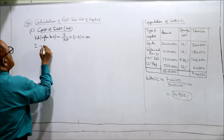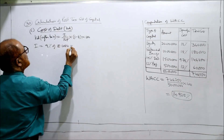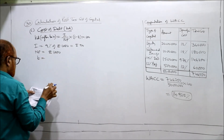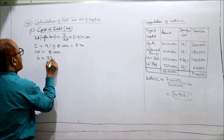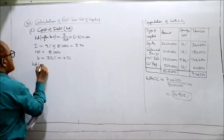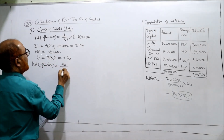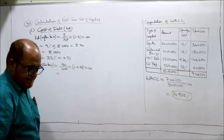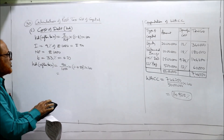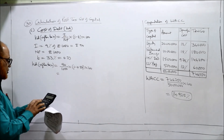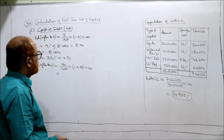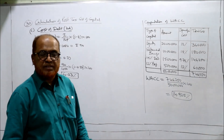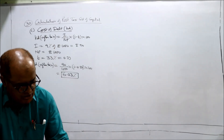I is equal to interest — 9% of rupees 1000 is 90 rupees. NP net proceeds on issue is 1000, no flotation cost. Tax rate is 33%. So KD after tax is equal to 90 divided by 1000 into 1 minus 0.33 into 100. So 90 into 0.67 into 100 divided by 1000, it comes to 6.03%. First bit completed.